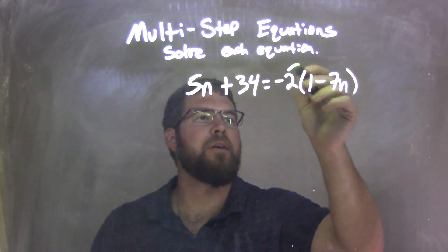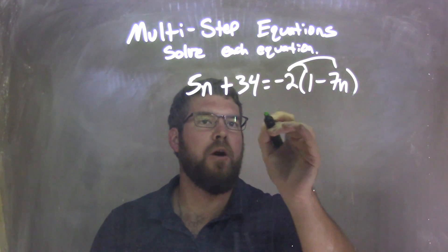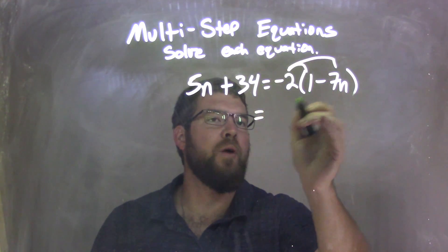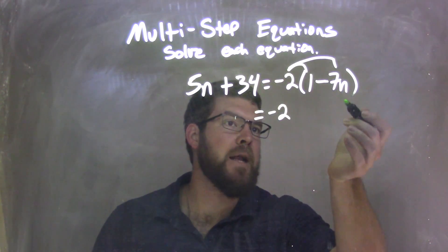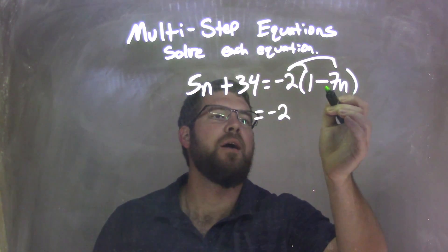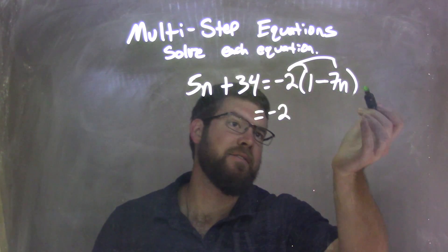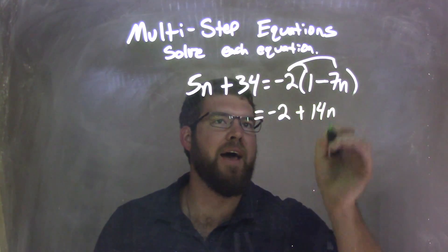Well, my first step here is I'm going to distribute that negative 2 across. So, negative 2 times 1 is negative 2. Now, be careful, that minus sign here is like that minus 7n. So, negative 2 times the negative 7n is a positive 14n.